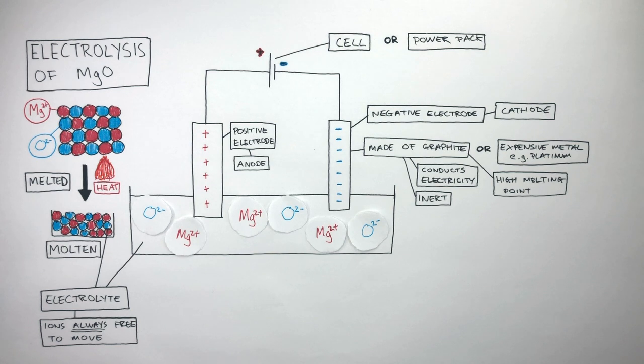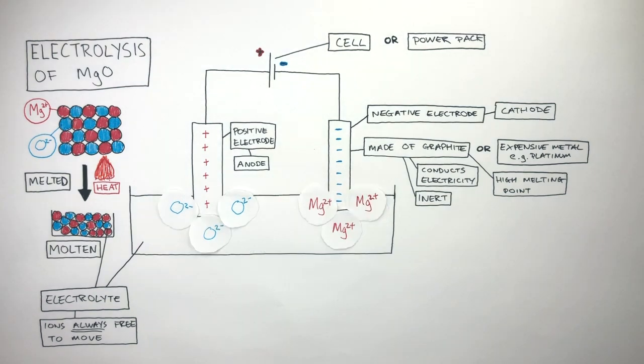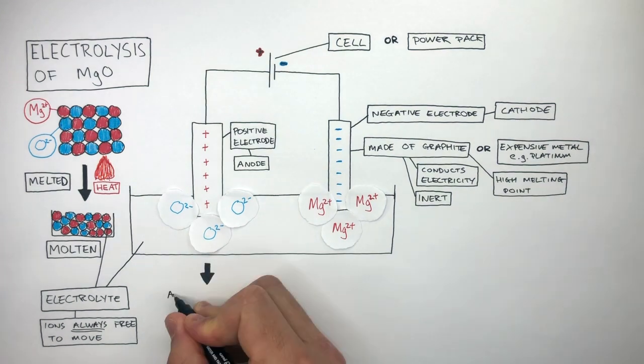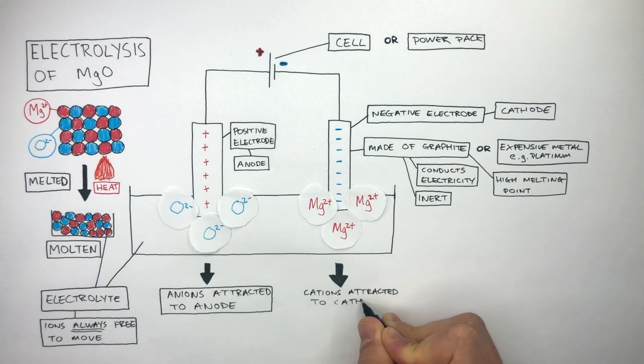Let's now focus on what happens in the electrolyte. The Mg2+ ions move towards the cathode and the O2- ions move towards the anode where the ions are now separated at each electrode. Anions are attracted to the anode and cations are attracted to the cathode.